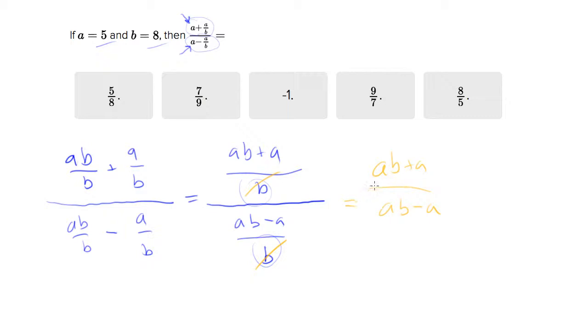Now you could keep solving this algebraically, but this is starting to feel to me like, all right, let's plug in now and see what happens simplification-wise. So let's plug in a is 5, b is 8: 5 times 8 plus 5 over 5 times 8 minus 5.